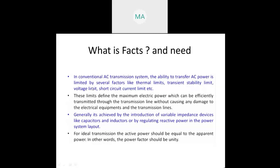In this transmission system, the ability to transfer AC power is limited by several factors like thermal limits, transient stability limits, and voltage. We are using 400 kV transmission lines, and whenever the generator is generating at 11 kV, we step up that voltage from 11 kV to 400 kV. We also have 750 kV transmission. We go from 11 kV to 400 kV because whatever the distance from consumer to generating station, to avoid the losses, we step up the voltage.